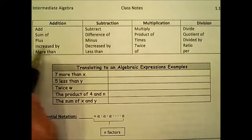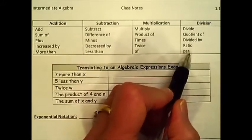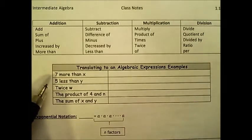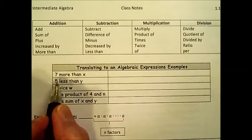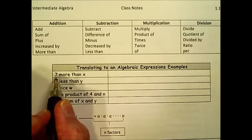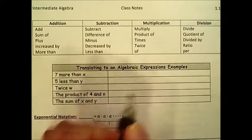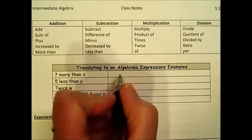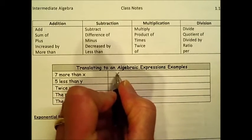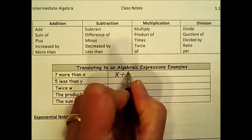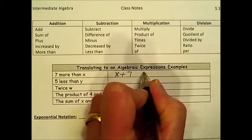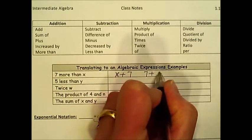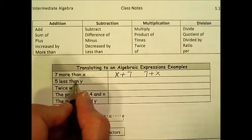I have some key words here that indicate specific operations, and let's do a little bit of practice. They're asking us to translate an algebraic expression example, 7 more than x. This one, because it's addition, the order is not as important. I can add in either order, either x plus 7 or 7 plus x.